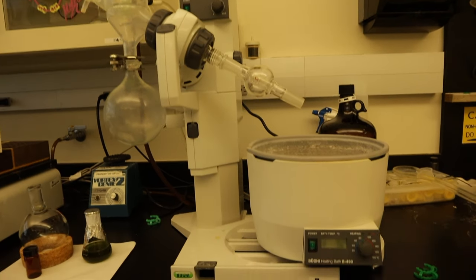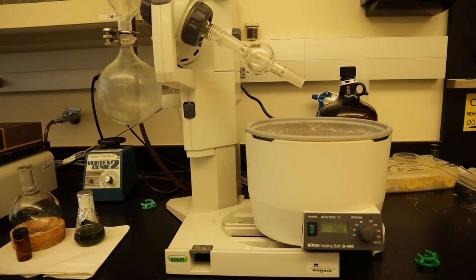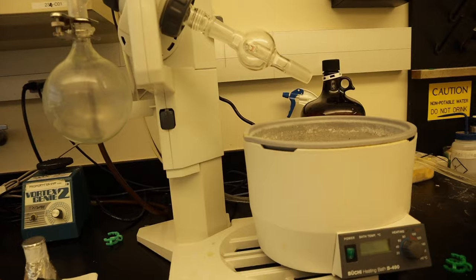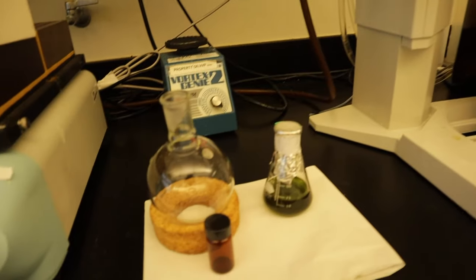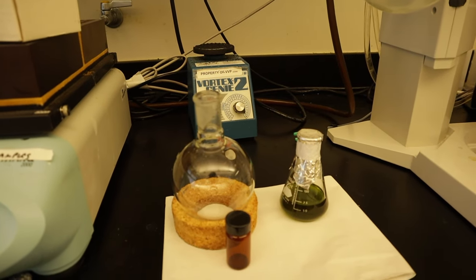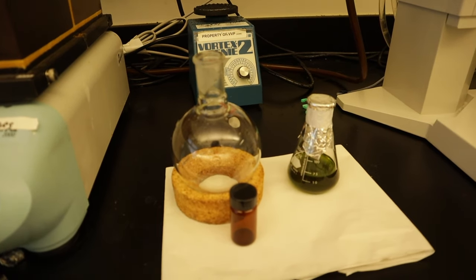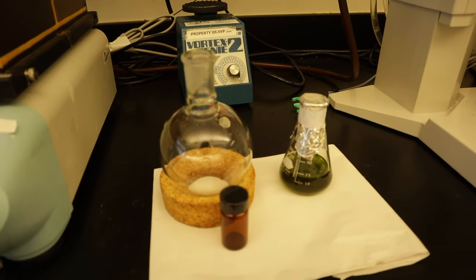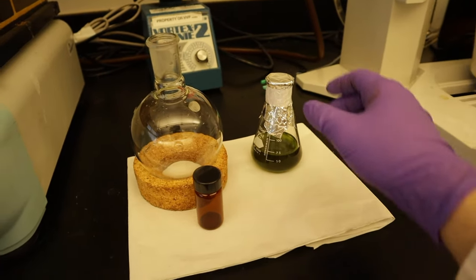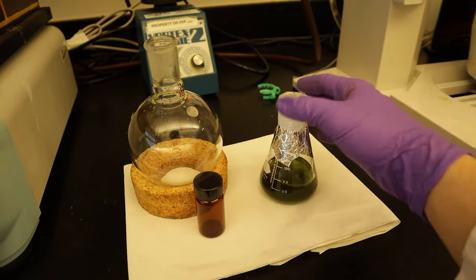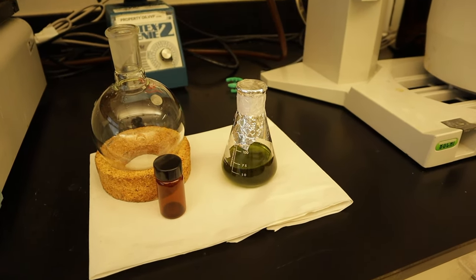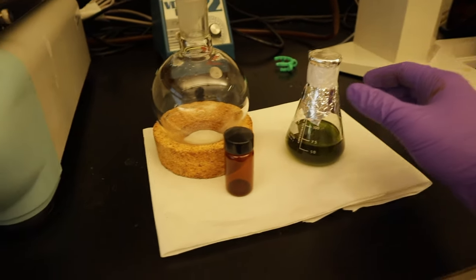Hello guys. This is a rotary evaporator and we will be using this today for our plant extraction. How do you set up the rotary evaporator and how do you load your samples? All you need are these items. First is your plant extract macerated in a solvent.